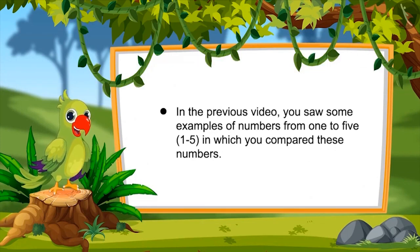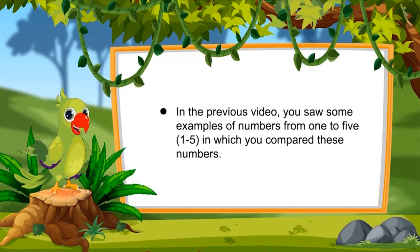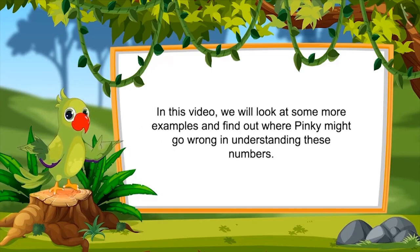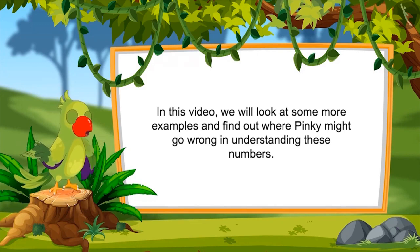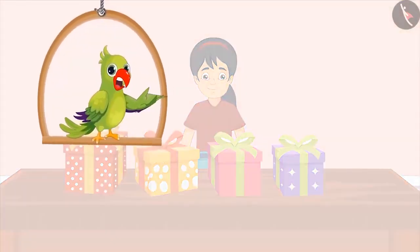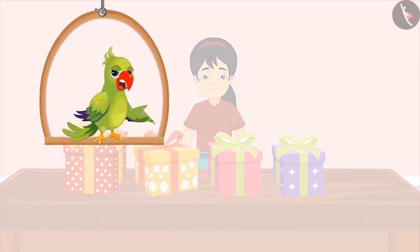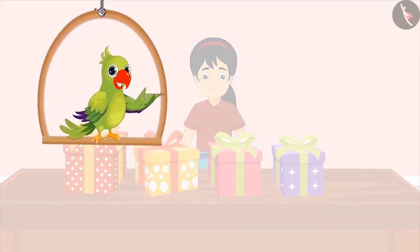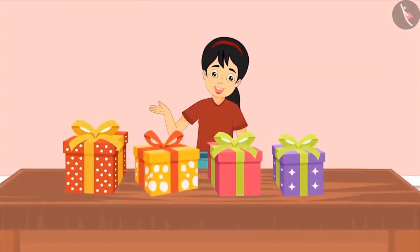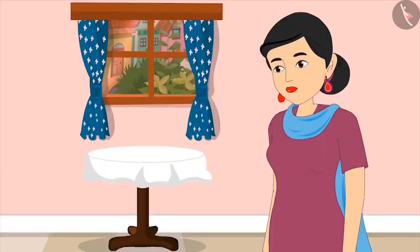So children, in the previous video, you saw some examples of numbers from one to five, in which you compared these numbers. In this video, we will look at some more examples and find out where Pinky might go wrong in understanding these numbers. Pinky has received a lot of gifts on her birthday. She is very excited to open them. Mom, can I open my presents and see what I have got?